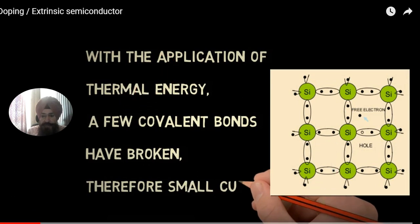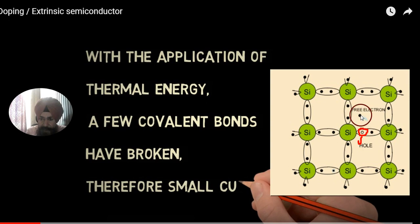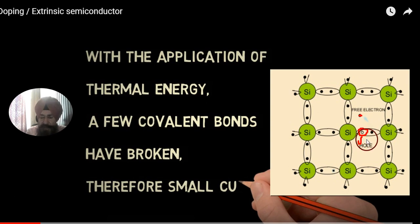With the application of thermal energy, a bond may break. When a bond breaks, an electron comes out and that vacant place — the deficiency of an electron — is called a hole. A hole means a missing electron position or vacancy. With the breaking of one bond, one electron and one hole pair is formed.